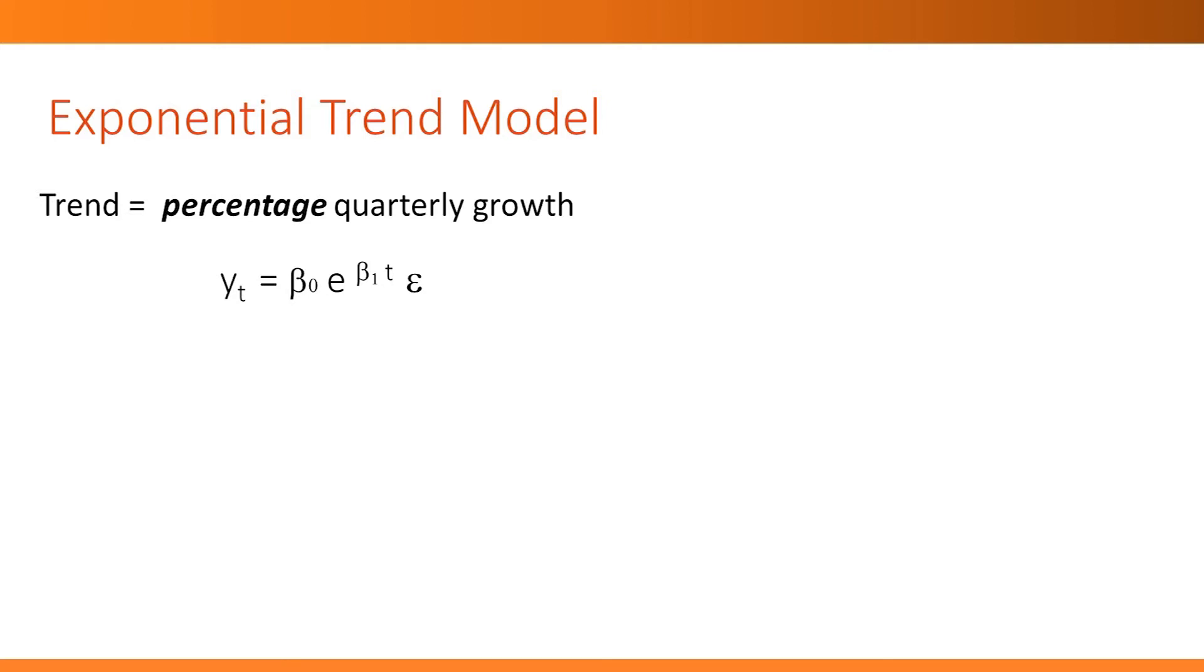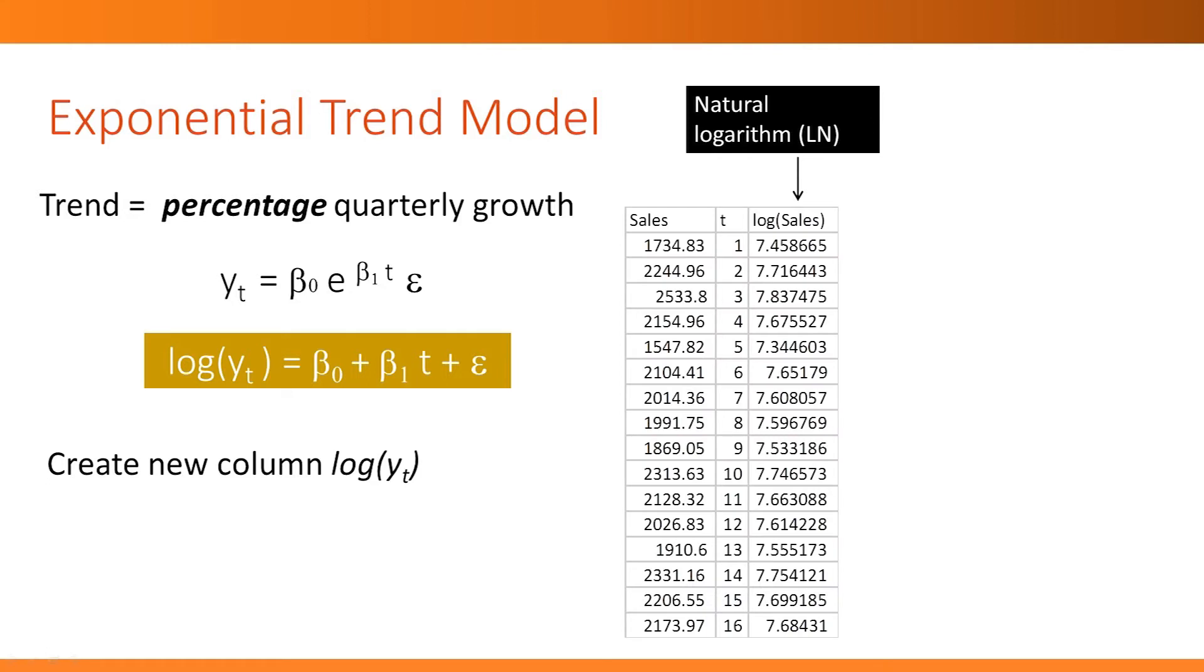If we take a logarithm on both sides, we get the equation that you see on the board. To create an exponential trend model, we again create a new column t, which is a running index. We then create another new column, which is the logarithm of sales. Specifically, we use the natural logarithm, ln. Then we use these two new columns in our regression model. Log of sales is the outcome variable, and t is the single predictor.